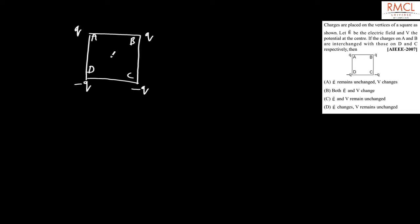If the charges on A and B are interchanged with those on D and C respectively, what happens to E and V? In the original configuration, the electric field at the center due to charge Q at vertex A points in one direction, due to Q at vertex B in another direction, and due to -Q at vertex D in the same direction — giving a net electric field in that combined direction.